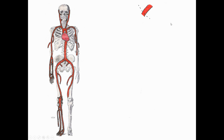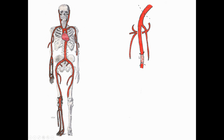Moving into the lower limb proper, the external iliac crosses out of the abdomen underneath the inguinal ligament to become the femoral artery. The femoral artery travels inferiorly through the anterior compartment of the thigh, giving off the deep femoral artery to supply the medial and posterior muscle groups, as well as circumflex branches to the head of the femur. The femoral artery continues inferiorly, passing through the adductor canal and exiting the adductor hiatus posteriorly. Posterior to the knee, once it exits the adductor hiatus, it becomes the popliteal artery.